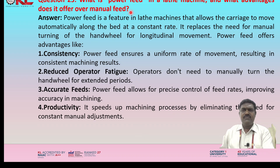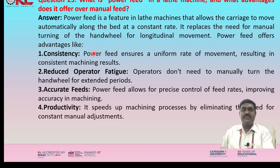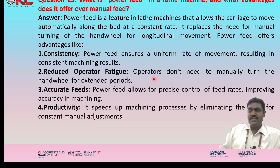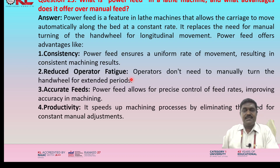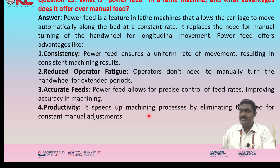What is power feed in a lathe machine and what advantages does it offer over manual feed? Power feed is a feature that allows the carriage to move automatically along the bed at a constant rate, replacing the need for manual turning of the handwheel for longitudinal movement. Advantages include: consistency — power feed ensures uniform rate of movement, resulting in consistent machining results; reduced operator fatigue — the operator does not need to manually turn the handwheel for extended periods; accurate feeds — allows precise control of feed rates, improving accuracy; and productivity — speeds up the machining process by eliminating constant manual adjustments.